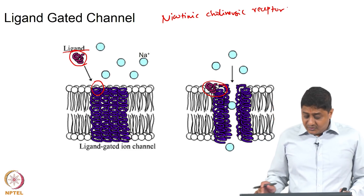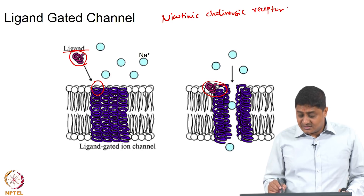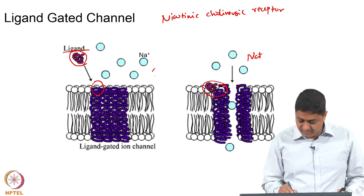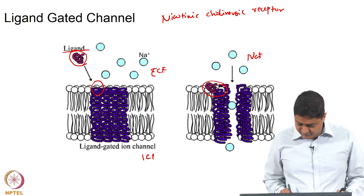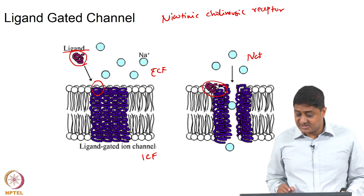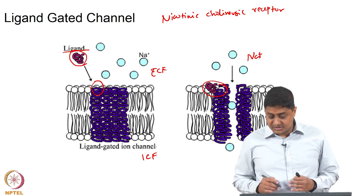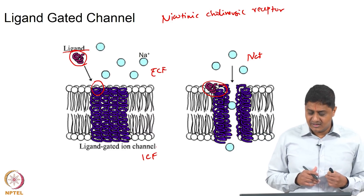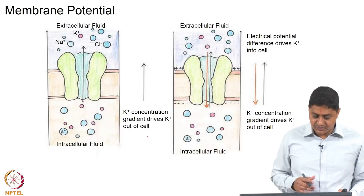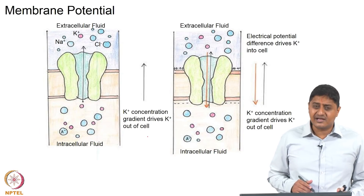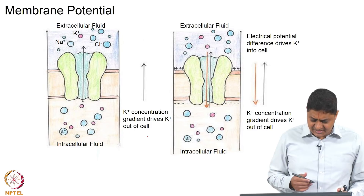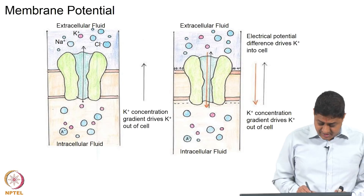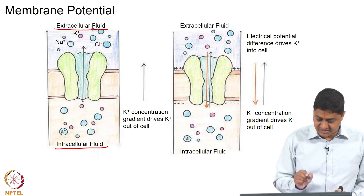The classic example is the nicotinic cholinergic receptors in the neuromuscular junction, which we will discuss in great detail in a future class. When ions are transported from one side — say sodium from the extracellular fluid to the intracellular fluid — it creates a charge separation. Let us take the case of a potassium channel that is open. Potassium is present in great quantity inside the cell compared with outside.